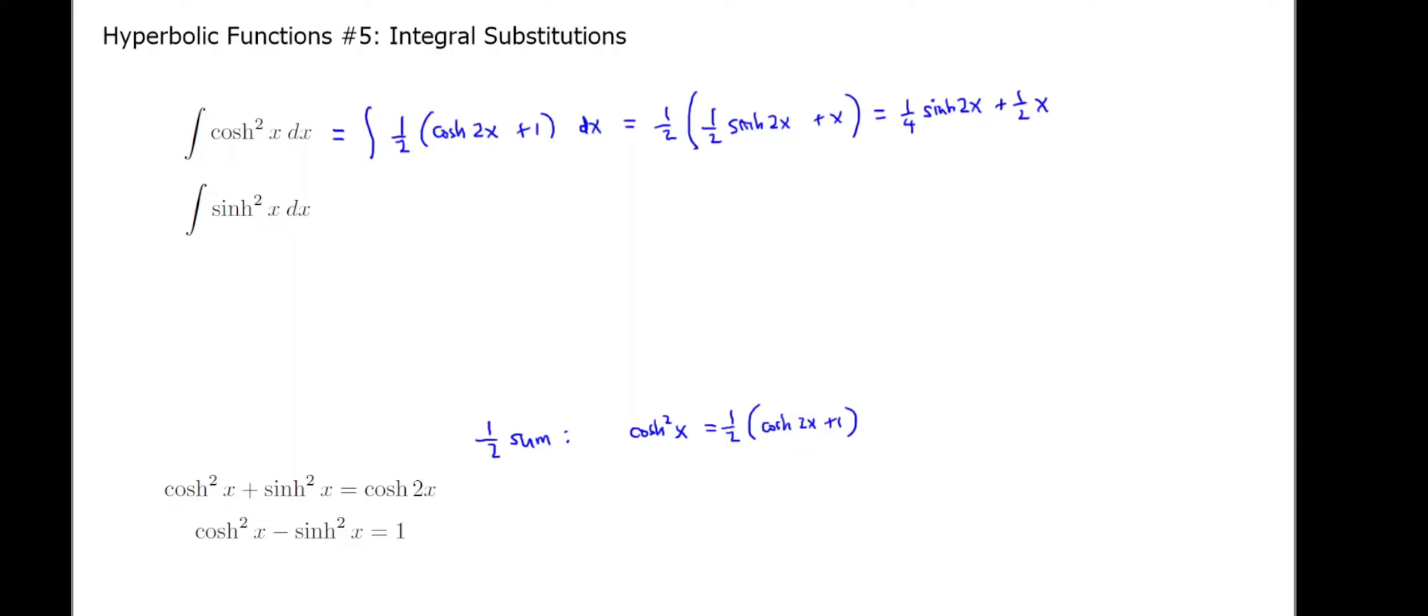I'm going to clean this up: one-fourth sinh 2x plus one-half x, plus c the constant, which I'm going to assume you know all about. Now, what if we want to do it for sinh squared? Let's take one-half the difference of these same two formulas. That is the top formula minus the bottom one. When we do that, we get sinh squared x equals one-half cosh 2x minus one.